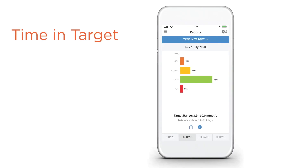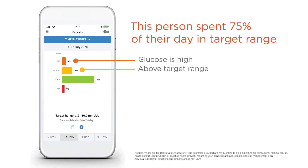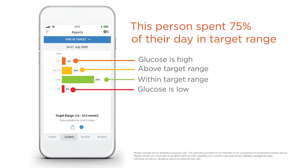Next, let's have a look at the time and target report. Time and target shows the percentage of time your glucose readings were below, above, or within your target glucose range. Here's an example of someone who spent 75% of their day in their target range. Orange shows you when your glucose is high, yellow is when you're above target range, green is when you are in range, and red represents low glucose.